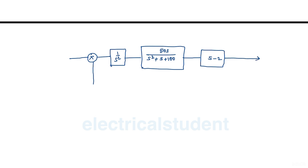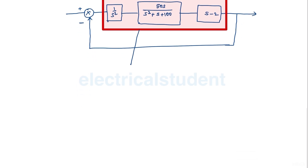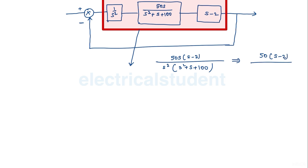This entire system is connected with unity feedback. The three blocks are connected in series, so they combine to give 50s(s-2) over s·(s² + s + 100), which simplifies to 50(s minus 2) over s(s² + s + 100).